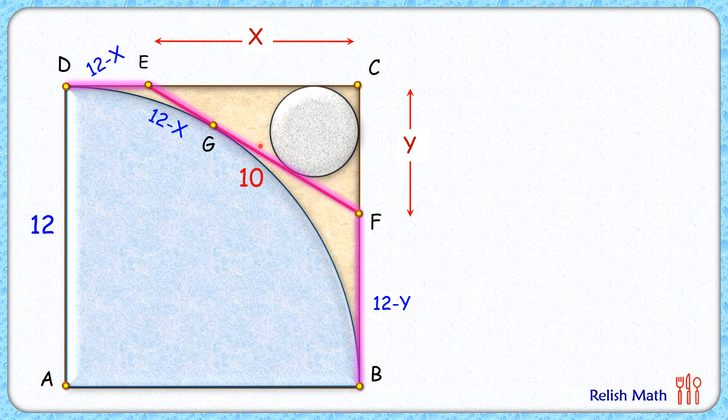Now if we compare EG plus GF, so EG plus GF is the full length EF. EG is 12 minus x, GF is 12 minus y, and this full red line segment is given as 10 centimeters. Equating it we'll get the value of x plus y as 14 centimeters.